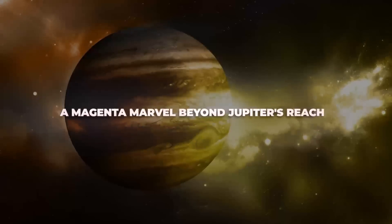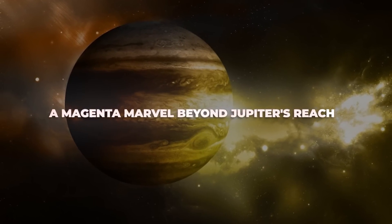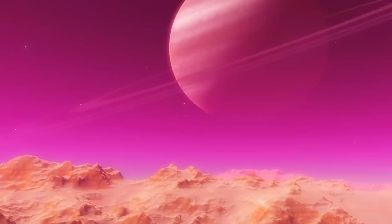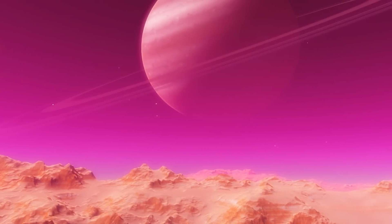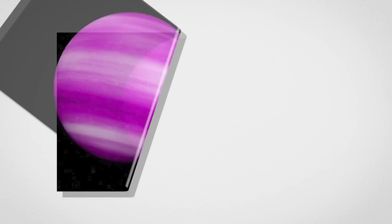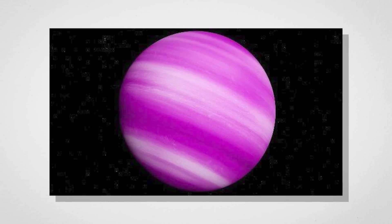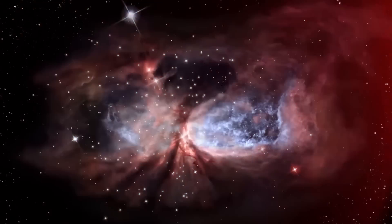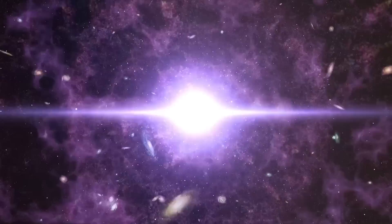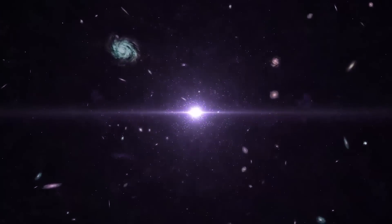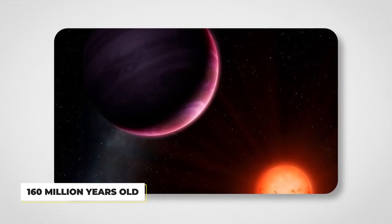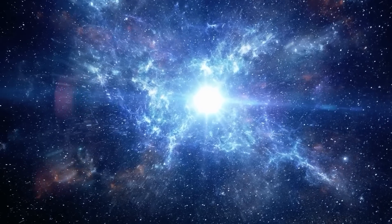A magenta marvel beyond Jupiter's reach. Gliese 504b isn't your run-of-the-mill gas giant. This planet is unique for a lot of reasons, but the first thing that catches your eye is its color. This planet is pink, magenta if we're being fancy. Scientists believe this strange hue comes from leftover heat from its formation. You see, this planet is still pretty young, at least in cosmic terms, about 160 million years old. That's baby territory for planets.